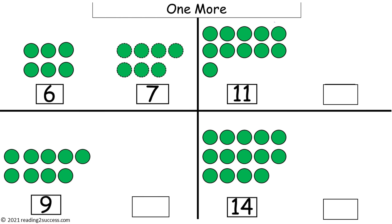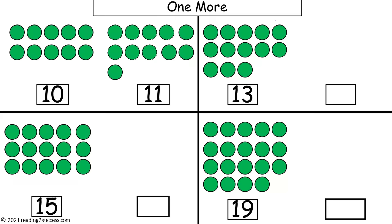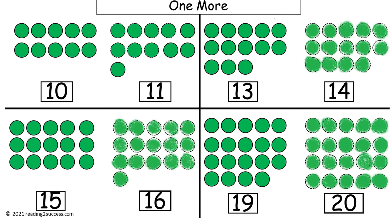The next activity, one more, helps kids develop an understanding of the relationship and the amount numbers represent — a skill that is needed for addition. The first problem is done so that kids can use it as an example. The number is six, represented by six green circles, and the answer is seven with seven green circles. This is a completed example: one more than eleven is twelve, one more than nine is ten, and one more than fourteen is fifteen. This is a second page for kids to complete, and this is the completed example.